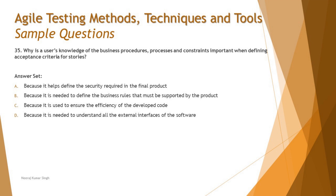Question number 35 is about business procedures, processes, and constraints related to acceptance criteria. Why is a user's knowledge of business procedures, processes, and constraints important when defining acceptance criteria for stories? This brings us back to the discussion on collaborative user story creation — everyone's contribution is needed to define a valuable user story with meaningful, achievable, and non-vague acceptance criteria.